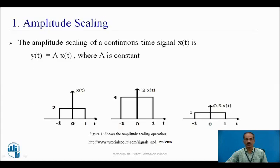Amplitude scaling: the amplitude scaling of a continuous time signal x(t) is y(t) = a·x(t), where a is a constant. For example, x(t) has an amplitude equal to 2, which varies from t = −1 to +1. If I want to calculate 2x(t), here a = 2, then the amplitude will be doubled — the amplitude is 2, which is doubled.